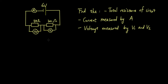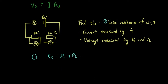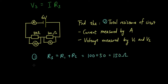The total resistance of the circuit: using the equation R3 equals R1 plus R2, it's 100 plus 50, so that's 150 ohms. Resistance is measured in ohms.